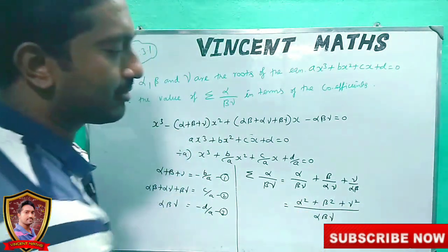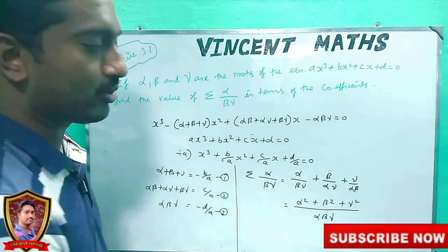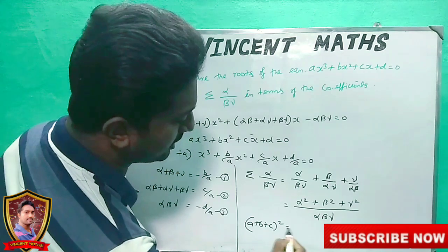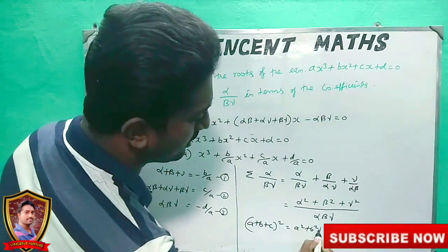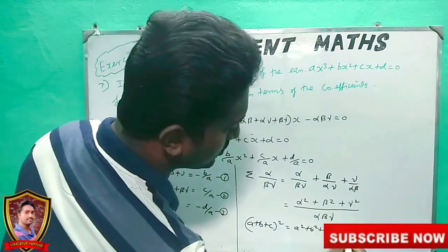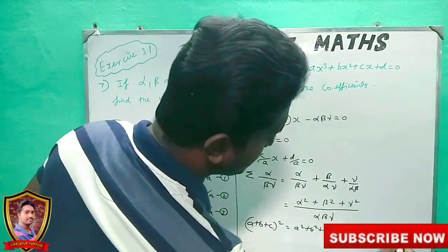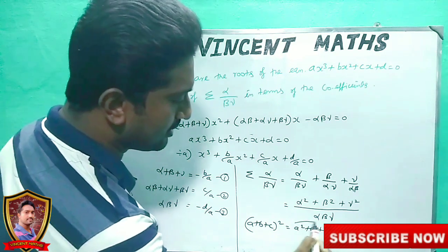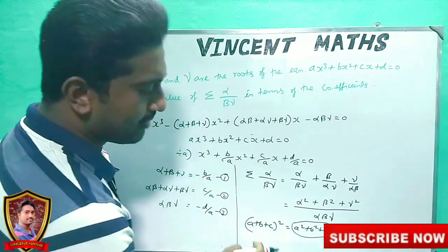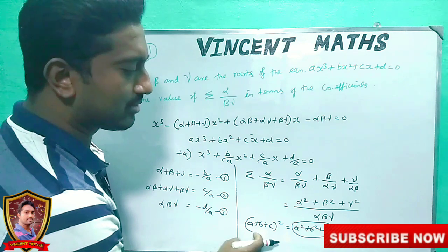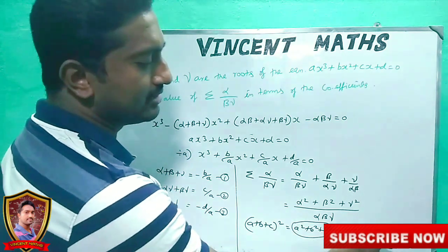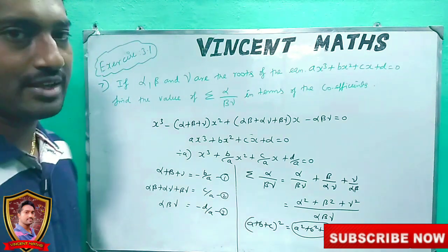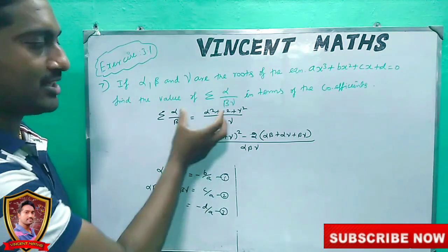So what do we do? This value is not enough. We can use an algebraic formula: (a + b + c)² equals a² plus b² plus c² plus 2(ab + ac + bc). So we need: alpha² plus beta² plus gamma² equals the whole square minus 2 into (ab + ac + bc).